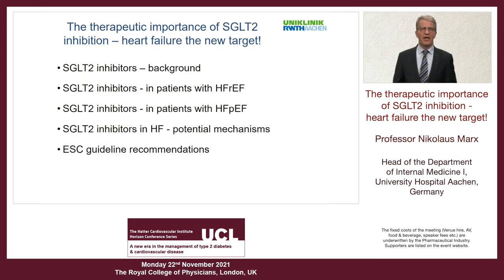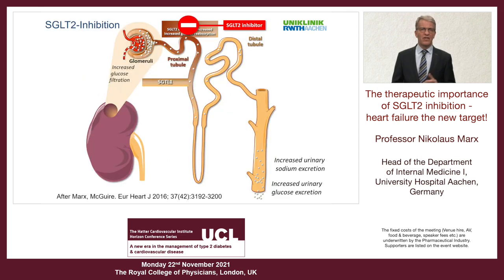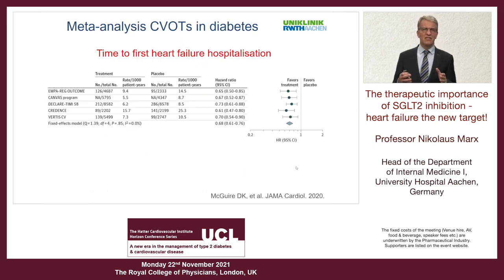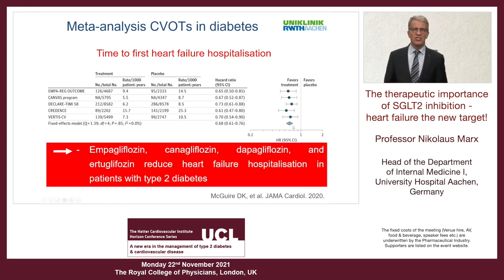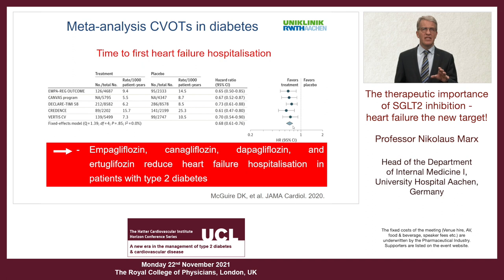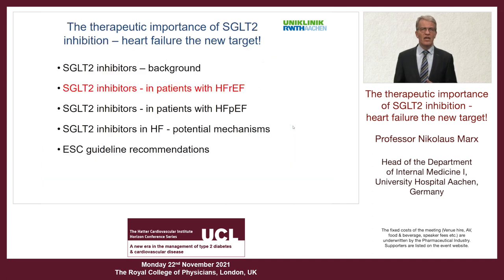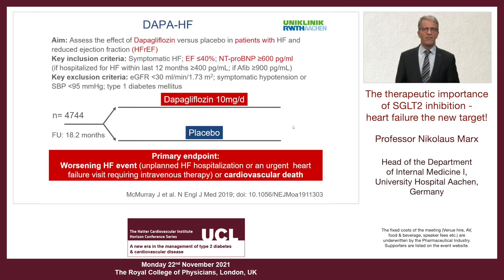SGLT2 inhibitors act by inhibiting the SGLT2 receptor in the proximal tubule, leading to urinary glucose excretion and increased excretion of sodium. Large trials in patients with diabetes — because this drug was initially developed to treat type 2 diabetes — consistently showed a reduction of heart failure hospitalization. This appears to be a class effect, and based on these data, dedicated trials were designed to examine these agents in patients with HFrEF and HFpEF.